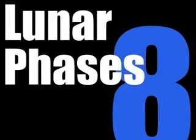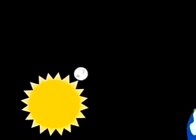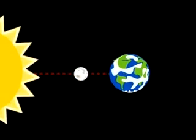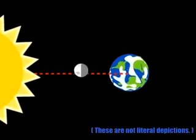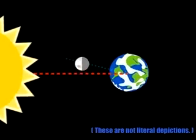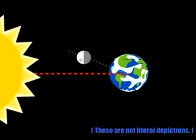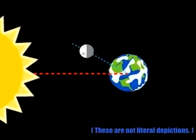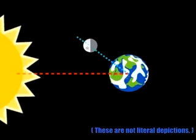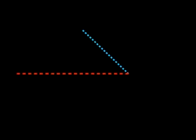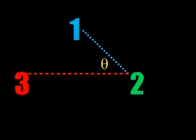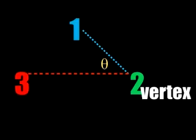The Moon has eight phases. They are determined by the position of the Moon in relation to the Sun and the Earth. As the Moon reaches certain positions in its orbit, the portion of the lit side that is visible to us changes. The Sun, Earth, and Moon act as three points in space. For each phase, the Sun and Moon form different angles with the Earth as its vertex.